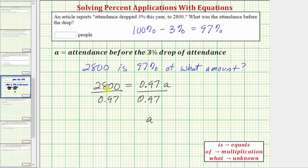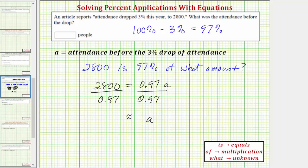Now we'll go to the calculator to determine this quotient. We are asked to round to the nearest whole number or nearest person. So we have 2,800 divided by 0.97.